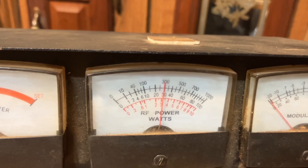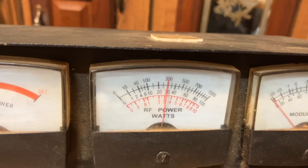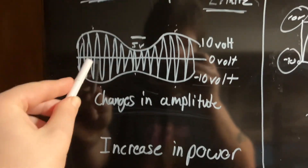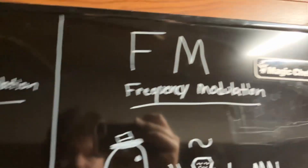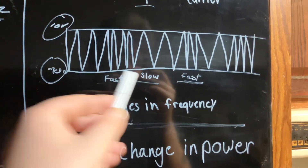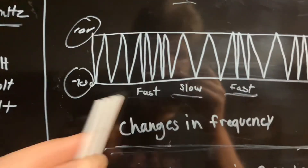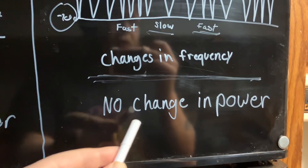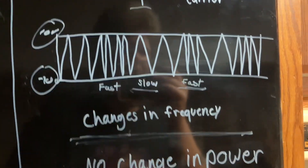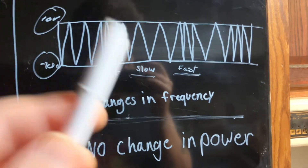What does that mean — is it detrimental or useful? In AM we had an increase in power because there are changes in amplitude when we're speaking into the microphone. With FM frequency modulation, we had no changes in power at all, because the frequency itself is what is changing. No matter how much you scream into your microphone, there's not going to be any variation of power. It may seem like FM is the weaker of the two modes, but they both have pros and cons.